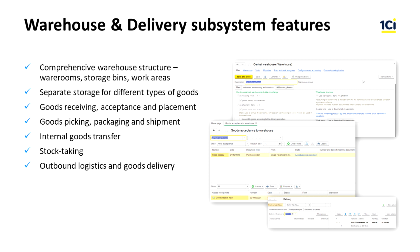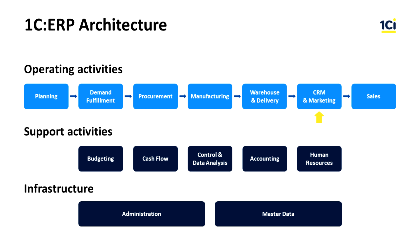When managing a warehouse in 1C ERP, we have the following capacities: a comprehensive warehouse structure that includes wear rooms, storage bins, and work areas; separate storage for different types of goods such as milk, fish, ice cream, furniture, and others. Various strategies of selection are used to optimize goods receiving, acceptance, and placement of goods in bins. There are also operations for goods picking, packaging and shipment, as well as internal goods transfer. We should also mention the multi-step process of stock taking and process optimization of outbound logistics.